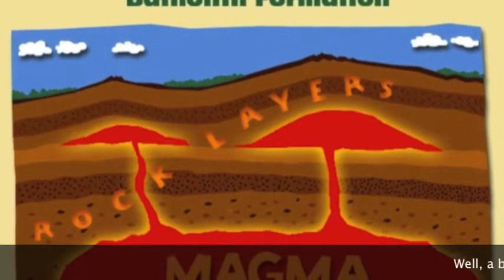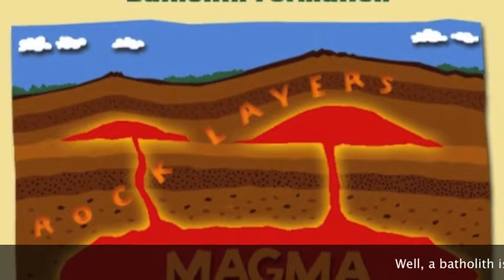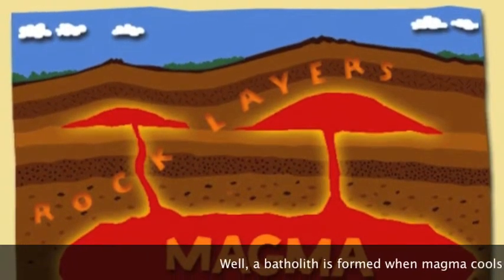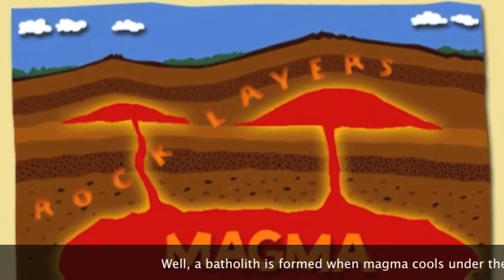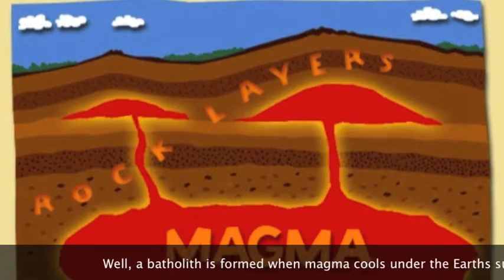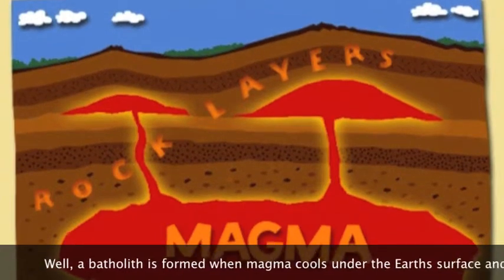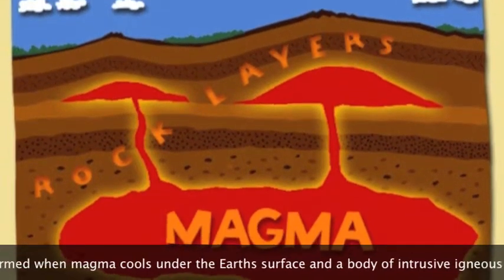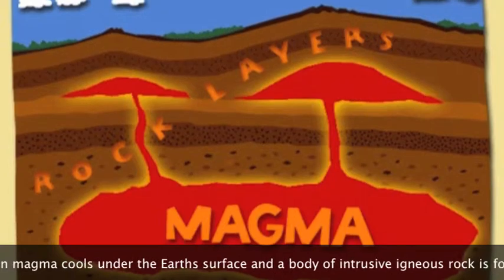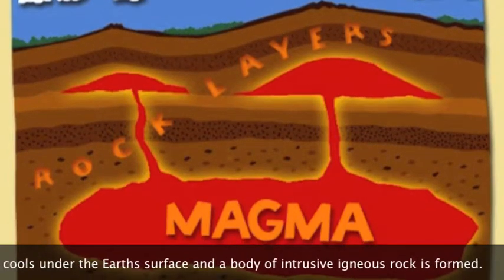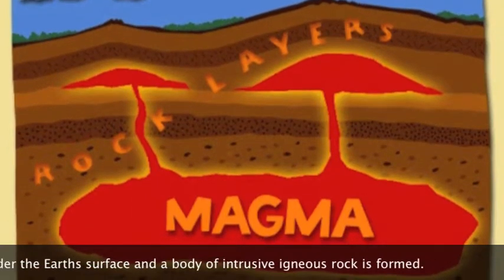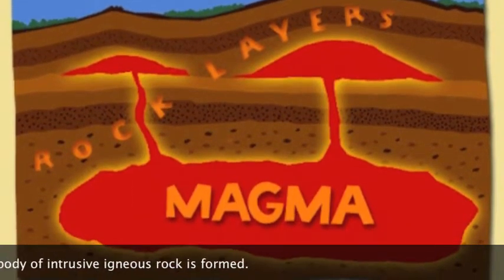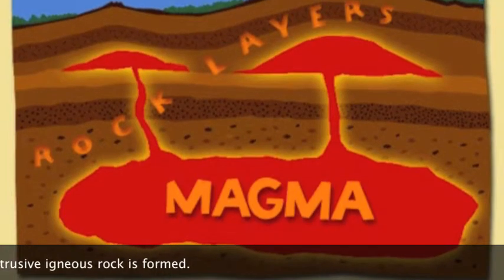One might ask, how did the batholith get there? Around 50 million years ago, magma formed under the surface of Idaho. It was pushed upward, forming mountain ranges. Some of the magma made its way to the surface, and that cooled rock is what we know today as the Idaho Batholith.